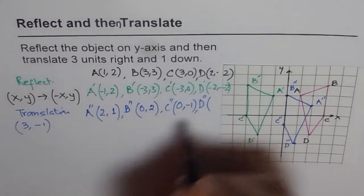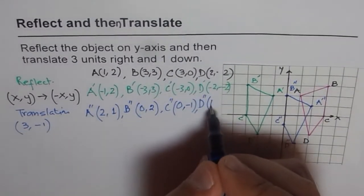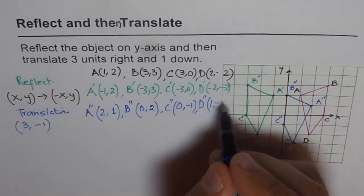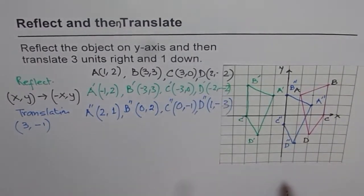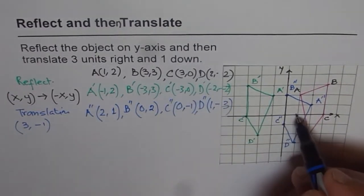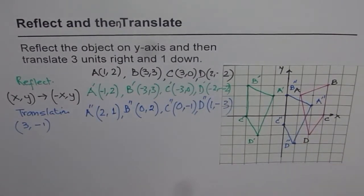And D double dash will be, when you add 3, get 1 plus and minus 1 gives you minus 3. So (1, -3). So that is how you get the coordinate points.